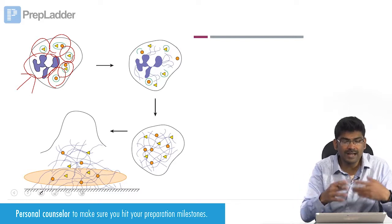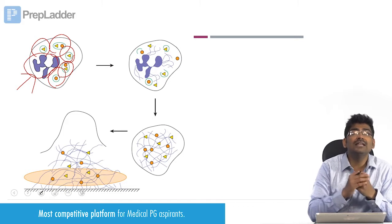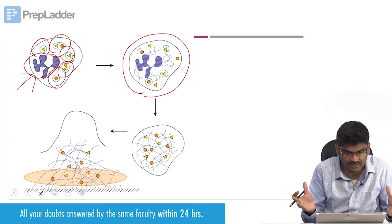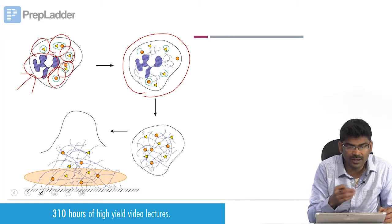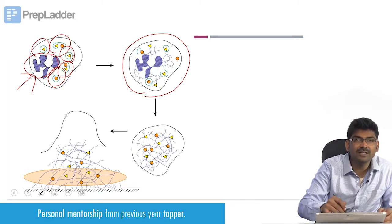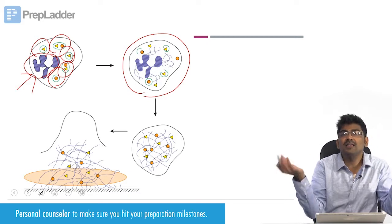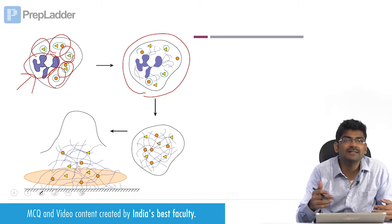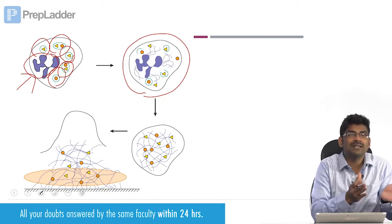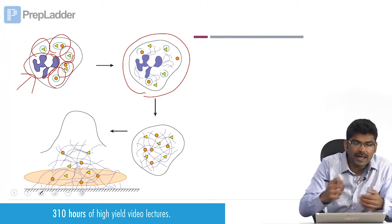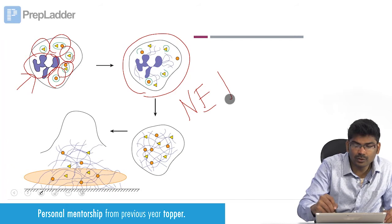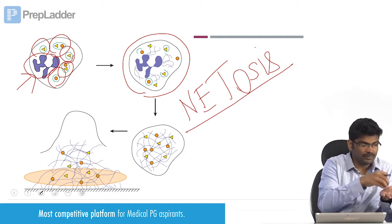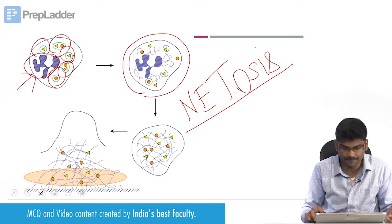To form that trap, the chromatin fibres should undergo decondensation. This is depicted here — the DNA is going through decondensation and the granules are also opening up, with the membrane of the granules opening up. Ultimately, this decondensed DNA and the granules come out. This is similar to apoptosis — programmed cell death. Because this is happening in neutrophils due to neutrophil extracellular trap, it has been called NETosis (N-E-T-O-S-I-S).